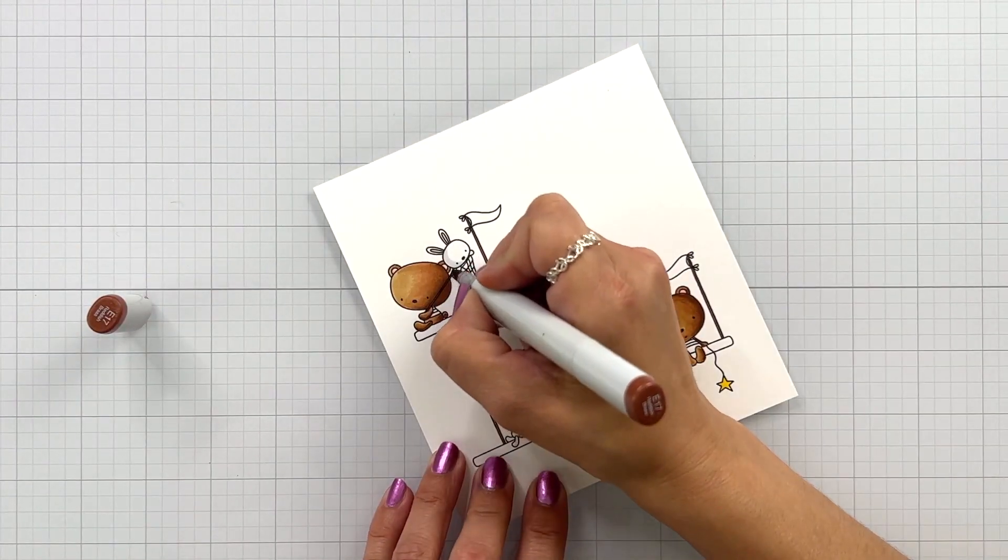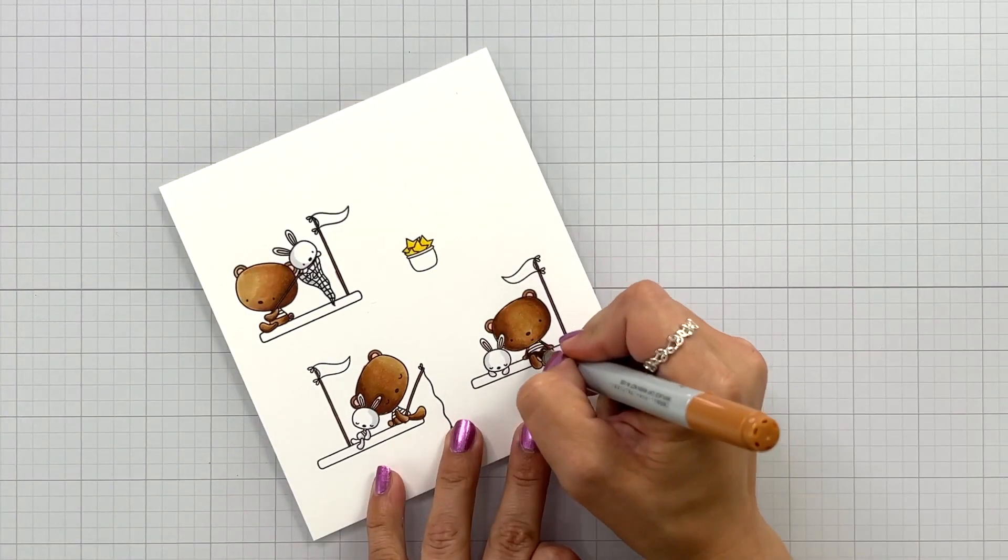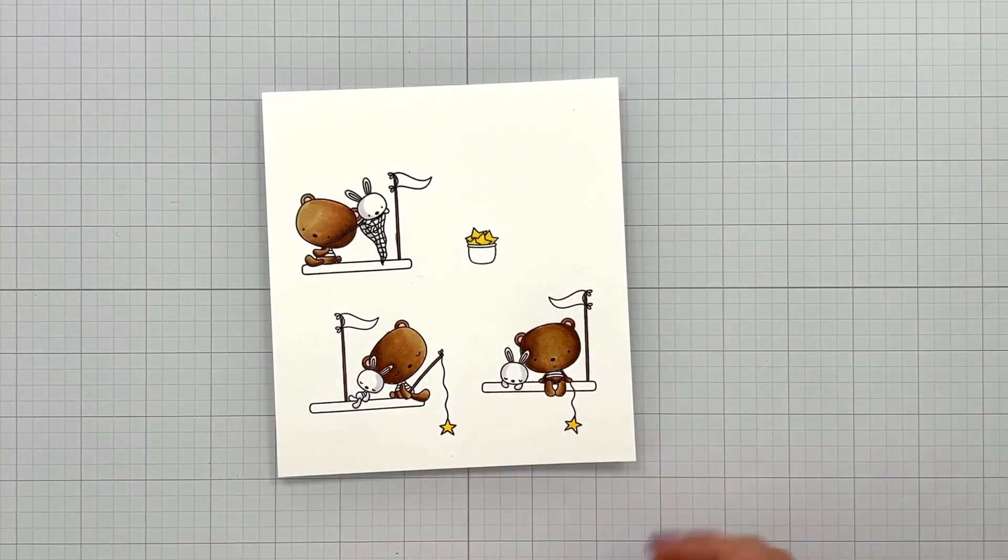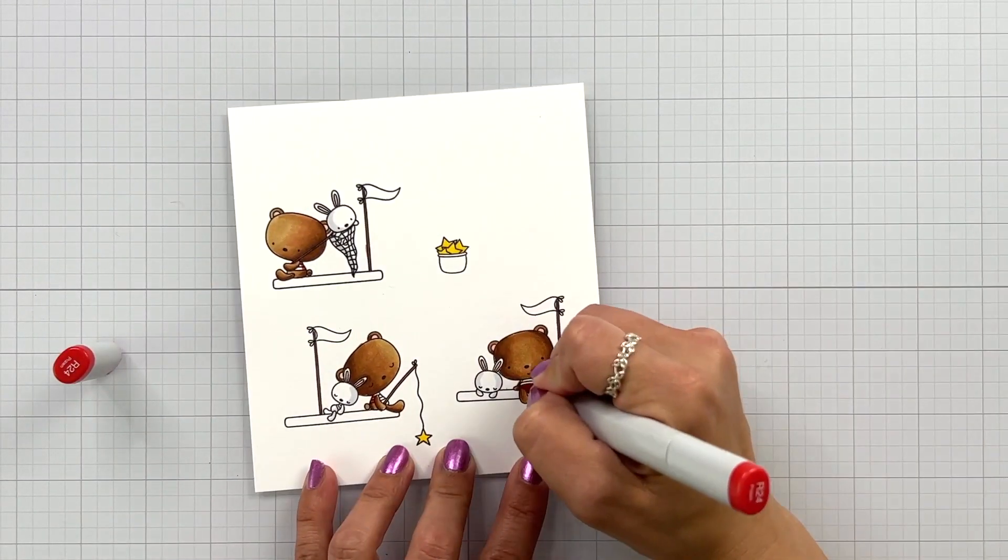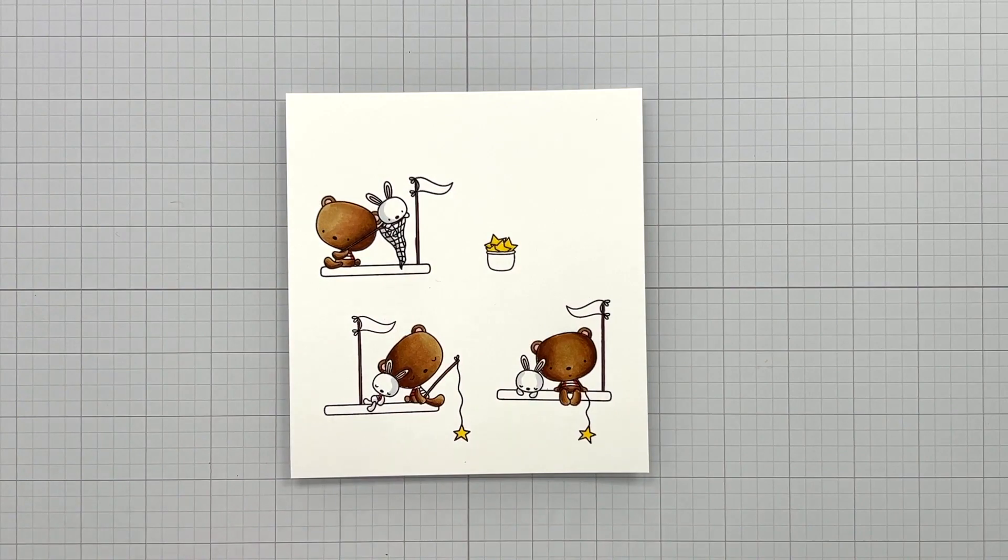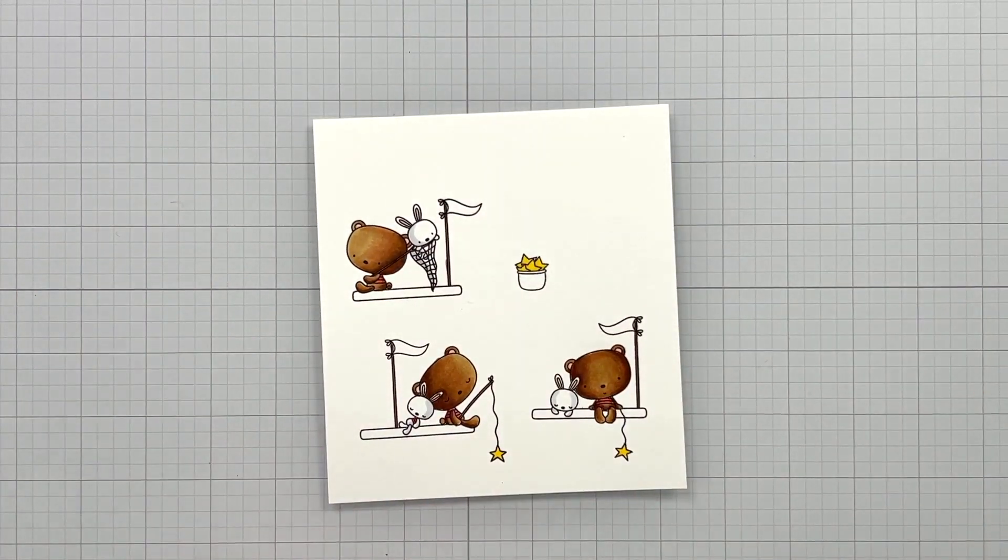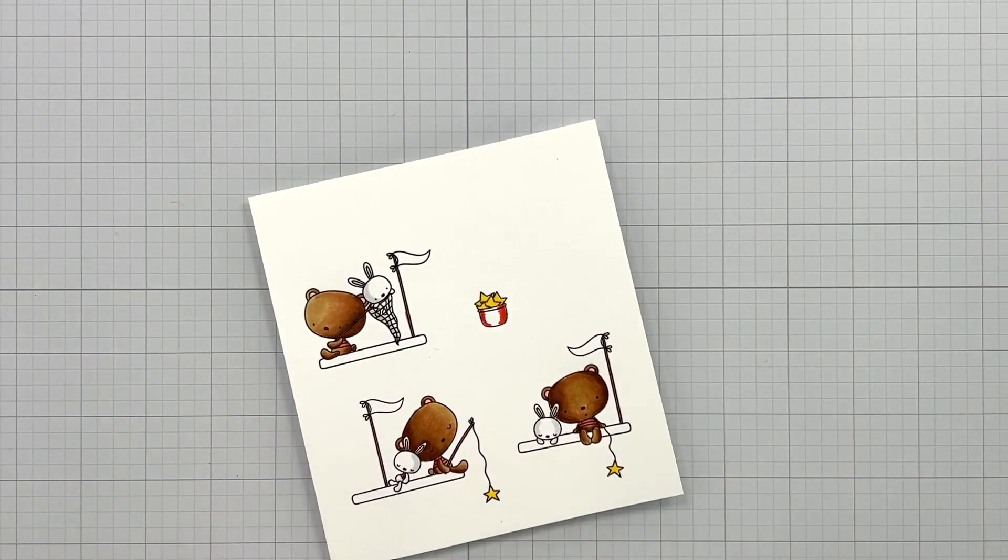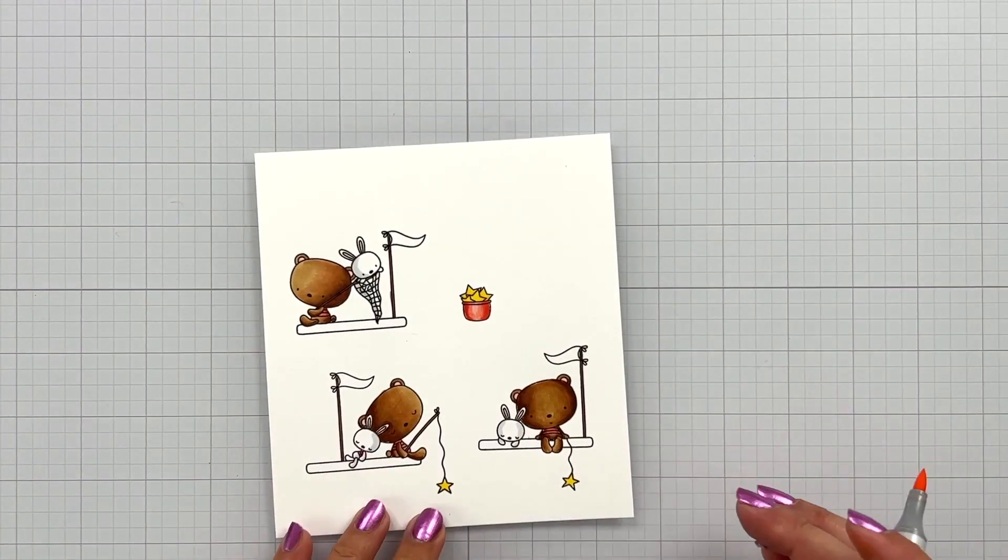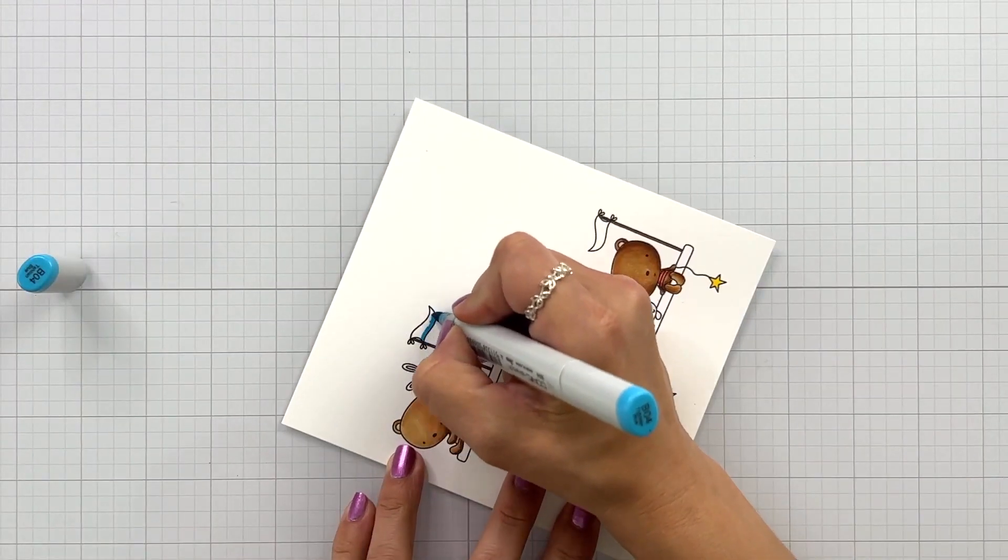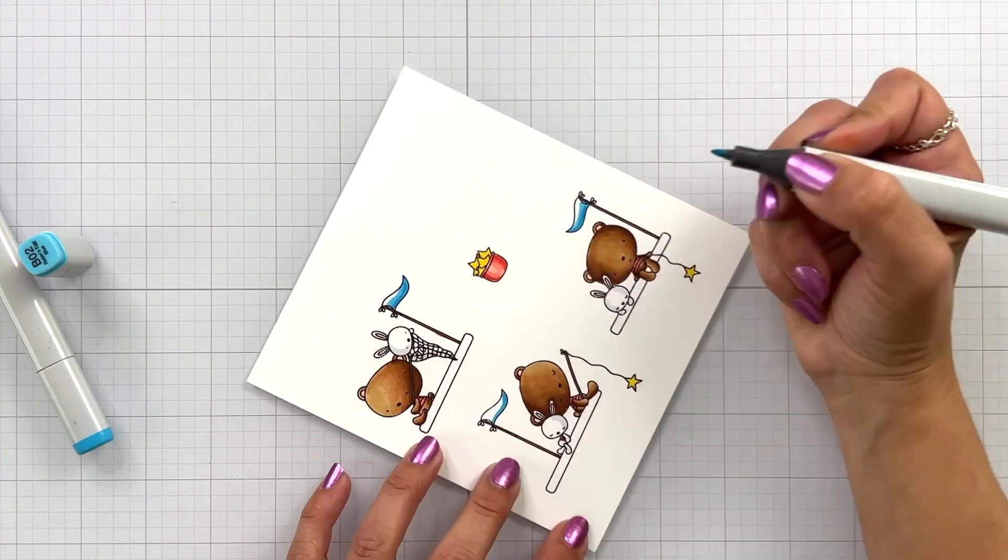I had forgotten to color in the belly of the bear in that right hand corner so I'm going to bring my E37 and 35 back in. I'm going to use some reds to do the shirts of the bear and the bunny. I'm also going to use that red combination for my little pail of stars, and for that I did R24, 22 and R20.